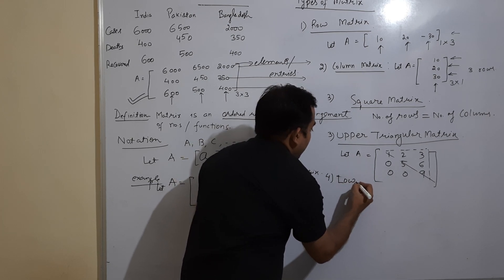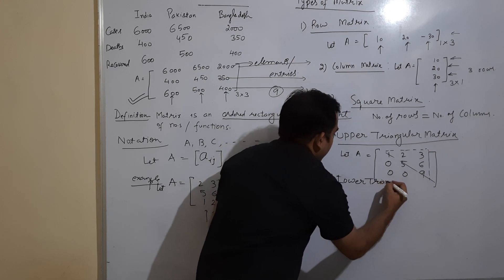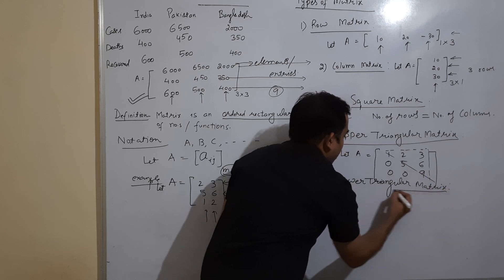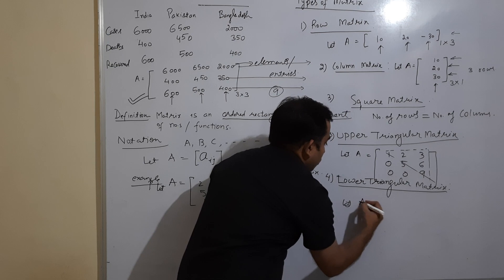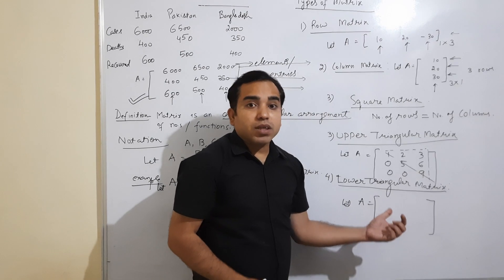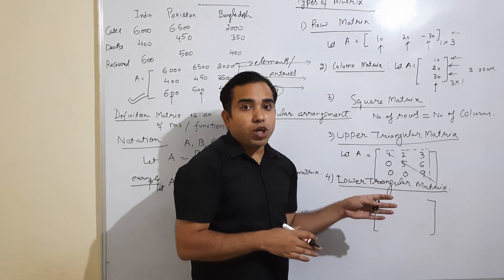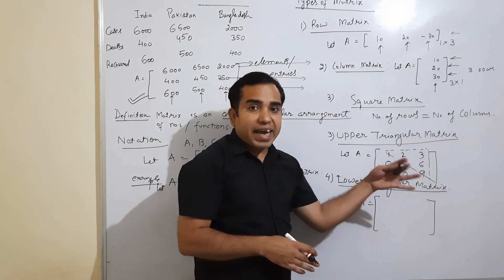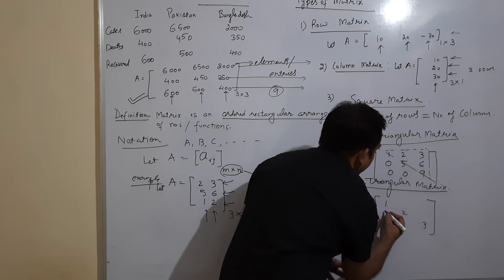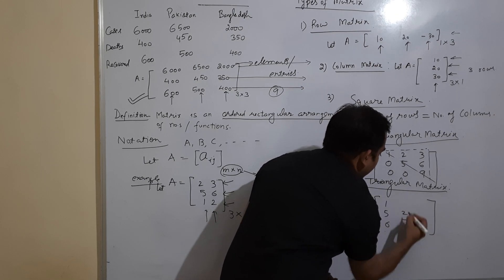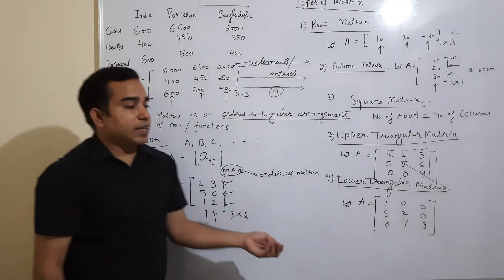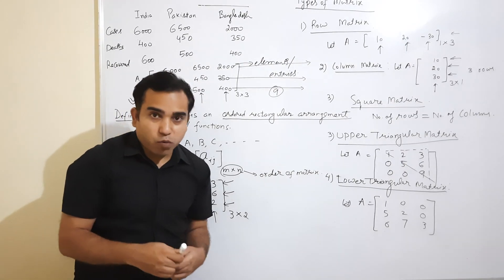Similarly, there is a lower triangular matrix. A lower triangular matrix is a square matrix in which the significant entries are only on and below the diagonal — all entries above the diagonal are zero. For example, with diagonal entries 1, 2, 3, 5, 6, 7 and all entries above the diagonal being zero, this is an example of a lower triangular matrix.